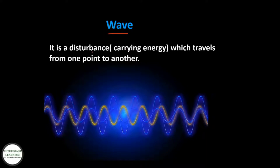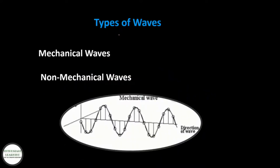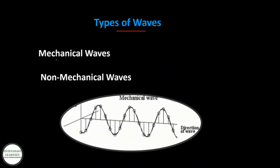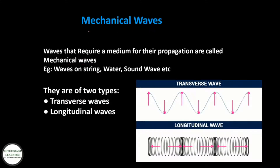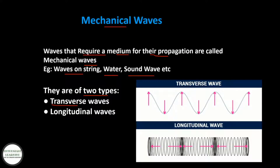A wave is a disturbance carrying energy which travels from one point to another. Types of waves: mechanical waves and non-mechanical waves. Mechanical waves are waves that require a medium for their propagation. Examples include waves on a string, water waves, and sound waves. There are two types of mechanical waves: transverse waves and longitudinal waves.